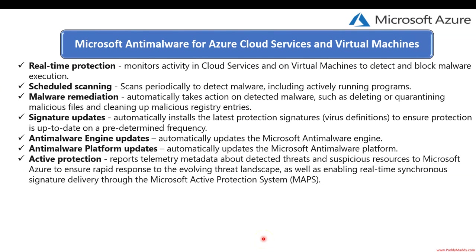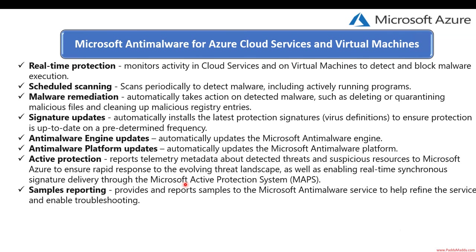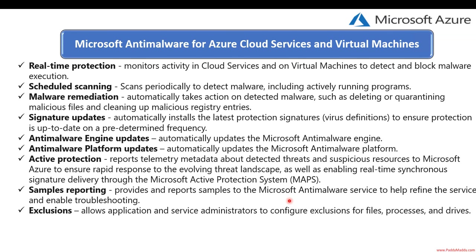Active protection provides telemetry data about threats and suspicious activity within your Azure services to ensure rapid response to evolving threat landscapes, including real-time synchronization and signature delivery through Microsoft Active Protection Service. Sample reporting is also available — when you submit samples to the anti-malware service, it helps with enabling and troubleshooting.